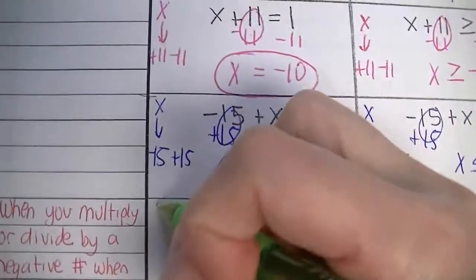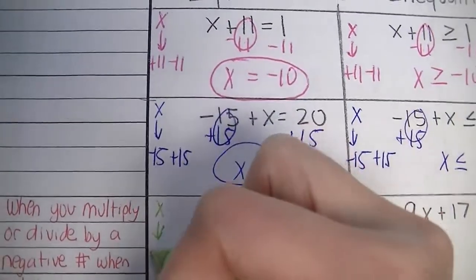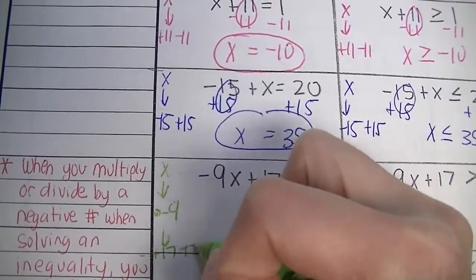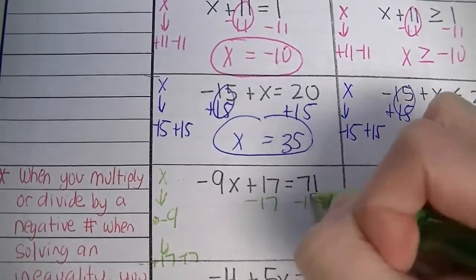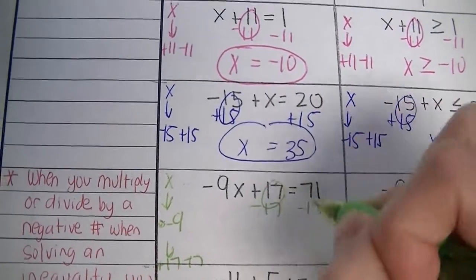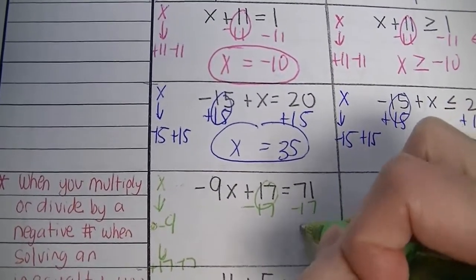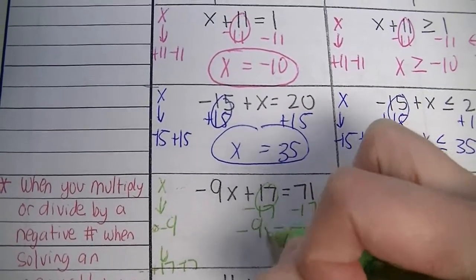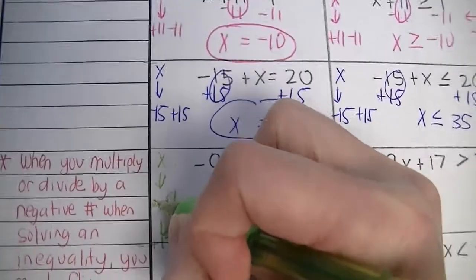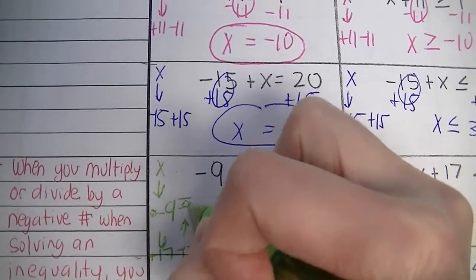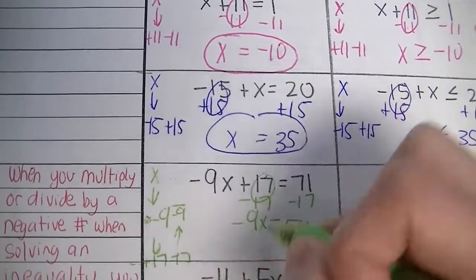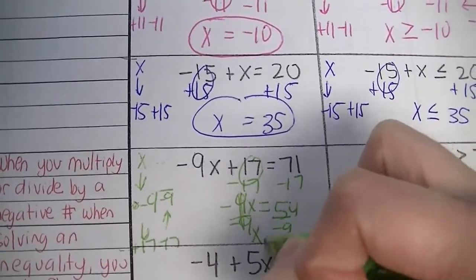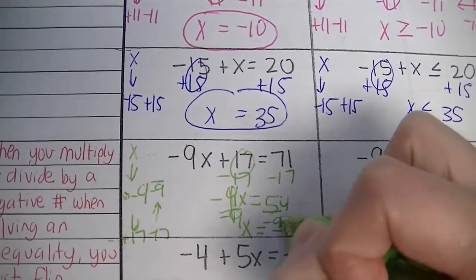Next problem — same thing. Start with your variable, then we multiplied by negative 9, then added 17. The inverse operation we do first is subtracting 17 from both sides. 71 take away 17 is 54. 17 take away 17 is 0. Bring down your equal sign and your negative 9x. The inverse operation of multiplying by negative 9 is to divide by negative 9, so that's what you do to both sides. The value of x is negative 6.